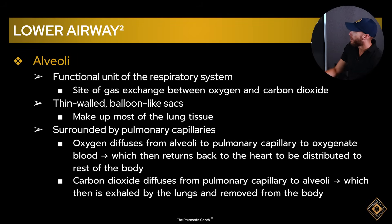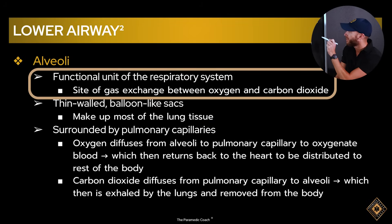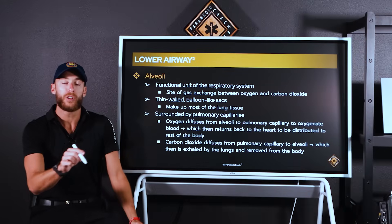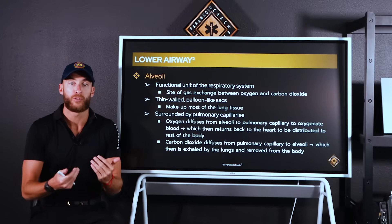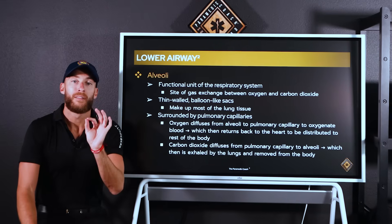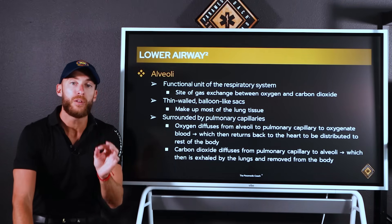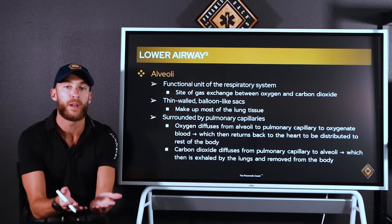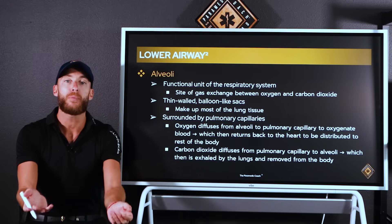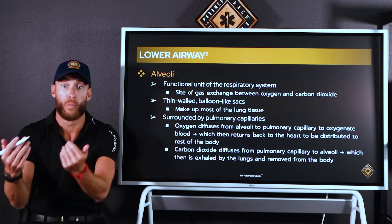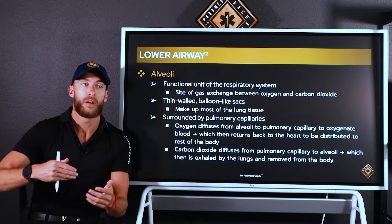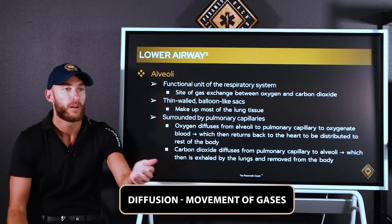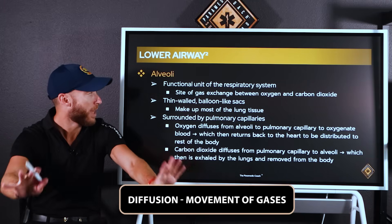The alveoli is the functional unit of the respiratory system. It is the site of gas exchange between oxygen and carbon dioxide. You're going to see the word diffusion — this is movement from higher to lower concentrations. Let's make it simpler: when you see 'diffuses' or 'diffusion,' it's simply the movement of gases, the movement of oxygen and carbon dioxide from one place to another. When we see diffusion, just think: movement of gases. Gas exchange means we're swapping locations.